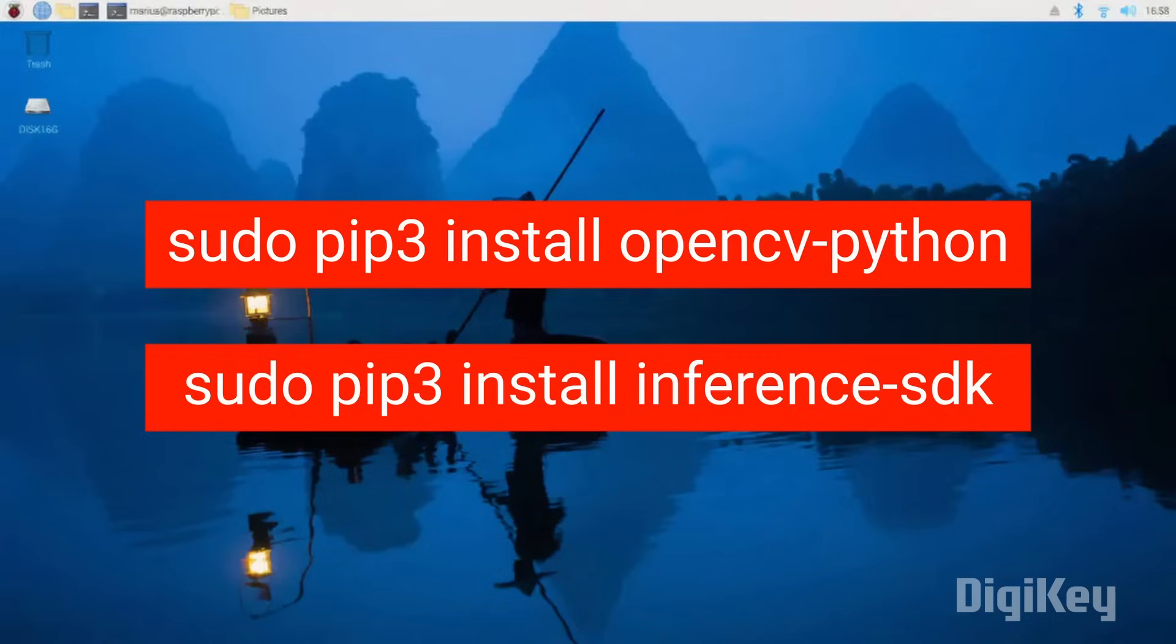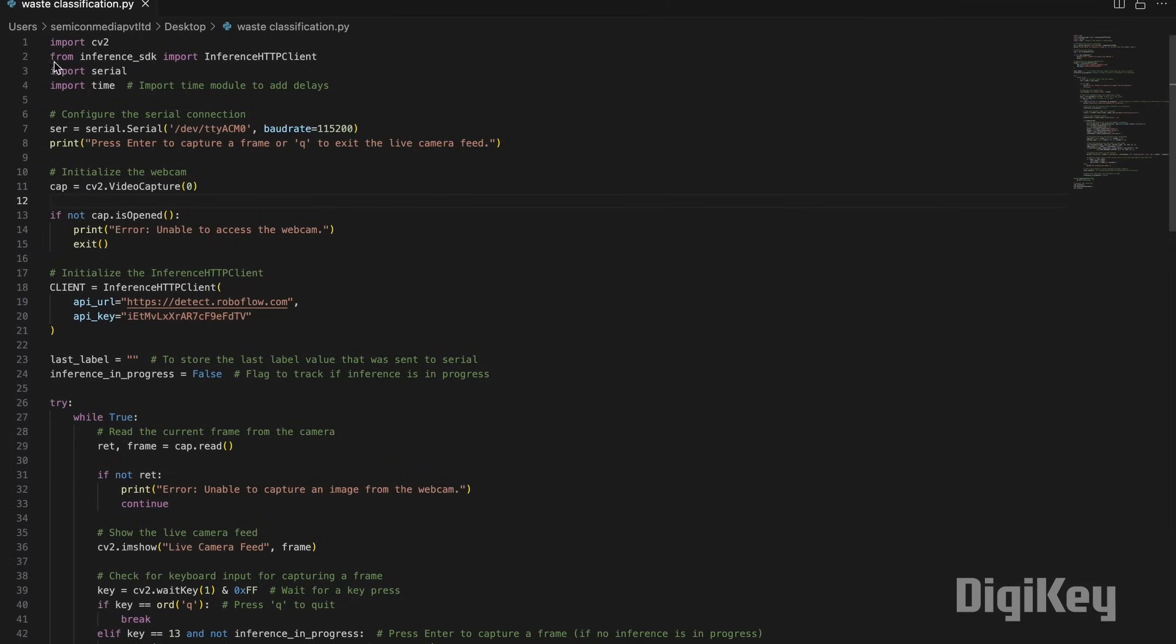We will be using these two packages in our Python program. After importing the required packages, we have configured the serial port for communication and have also configured the webcam for image capture. Then the RoboFlow model URL and the API keys are added, which can be obtained from the RoboFlow website.